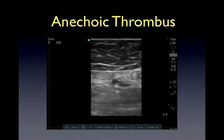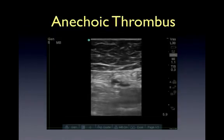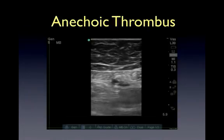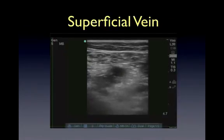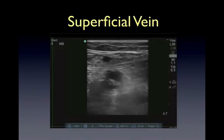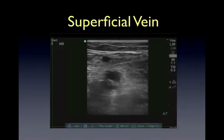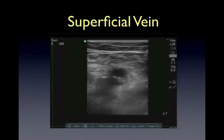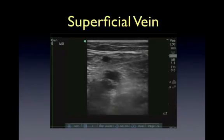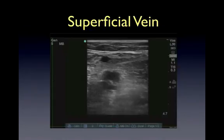This image shows an anechoic thrombus where the anterior and posterior walls of the vein are not completely touching — this would be a positive study for a DVT. Here we see a superficial vein in the upper left portion of the image which is completely collapsing, and the popliteal vein in the middle of the screen which is not collapsing. You may mistakenly think there is no DVT if you think the superficial vein is actually the deep vein, calling this negative when it is actually a positive study.